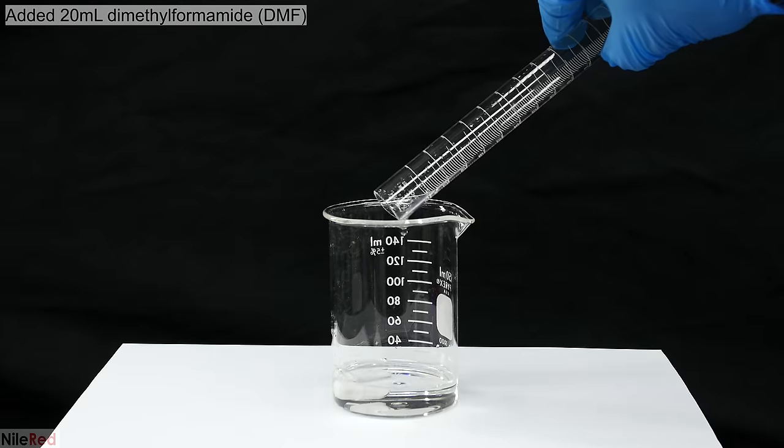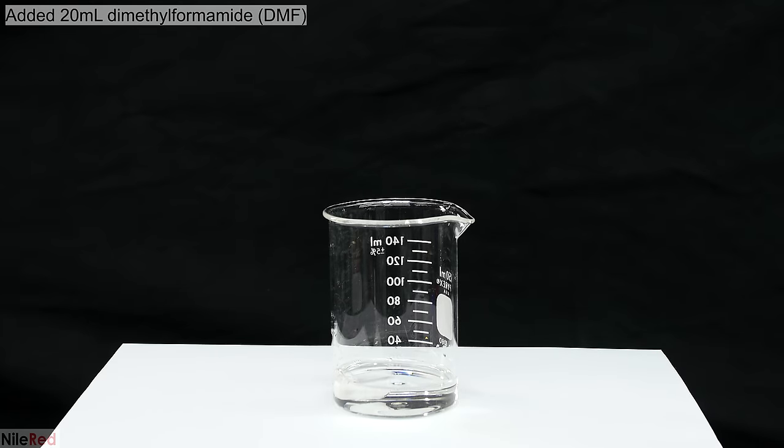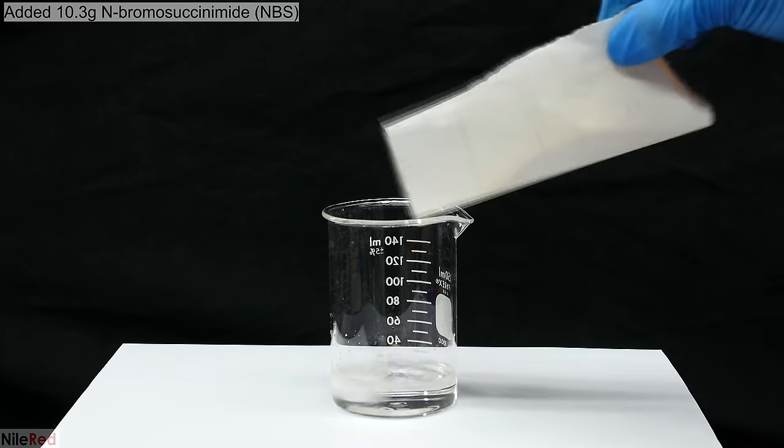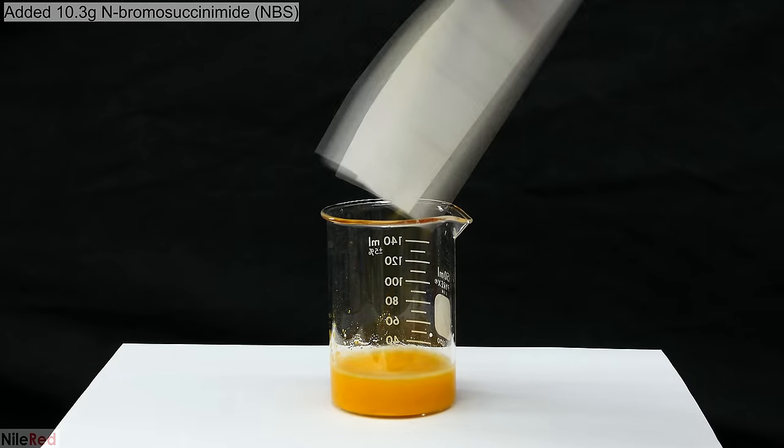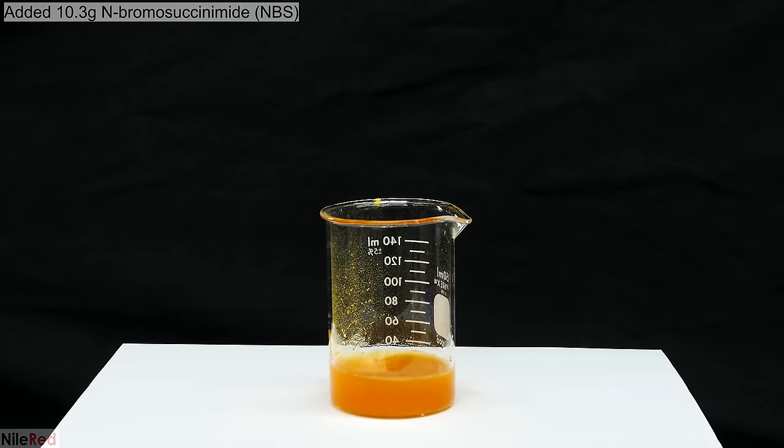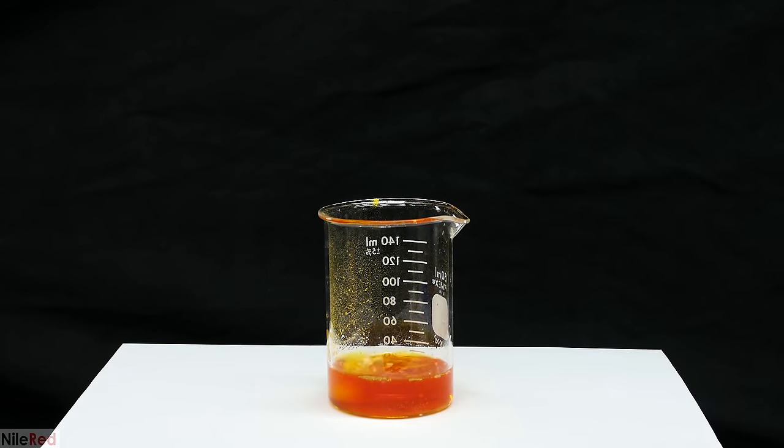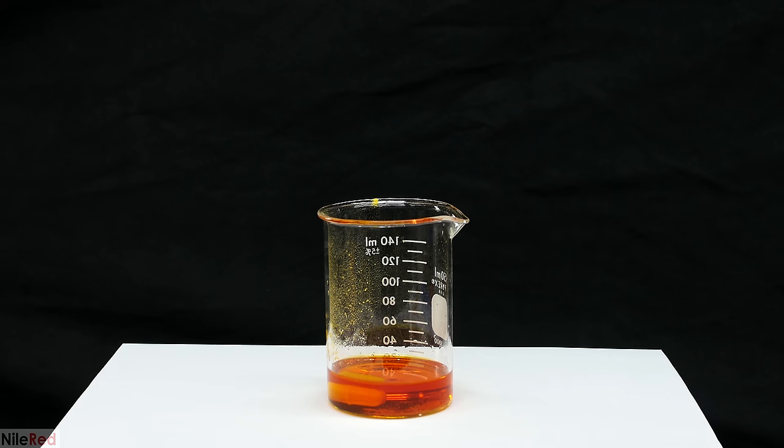To do this, we start by adding 20 milliliters of dimethylformamide, also known as DMF. Into the DMF, we add 10.3 grams of N-bromosuccinimide, or NBS for short. The mixture is stirred until we're left with a clear solution and all of the NBS has dissolved.